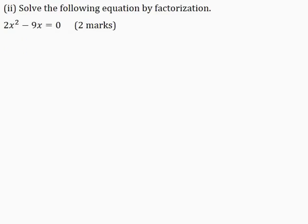Part 2: solve the following equation by factorization for 2 marks. They gave us a quadratic equation that we can factorize using the HCF. The HCF of 2x squared minus 9x is x. So: 2x squared divided by x is 2x, minus 9x divided by x is minus 9. This is equal to 0.